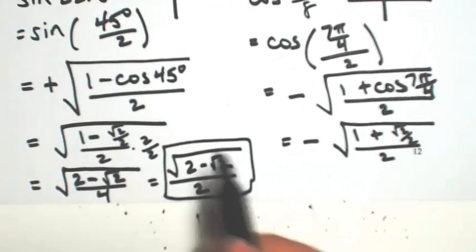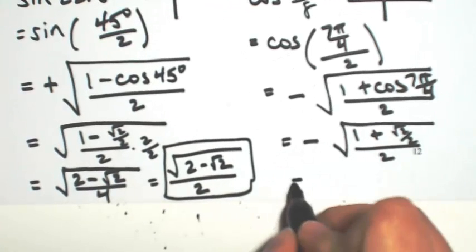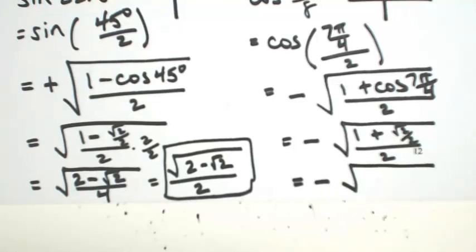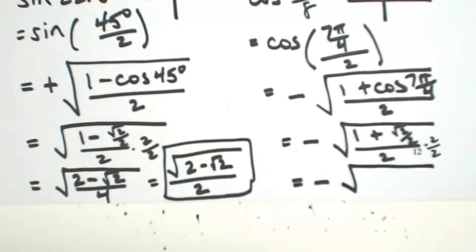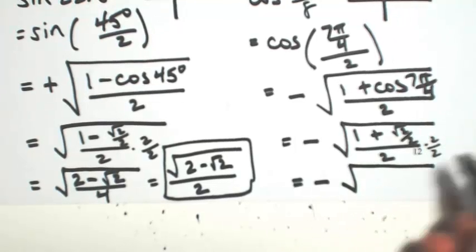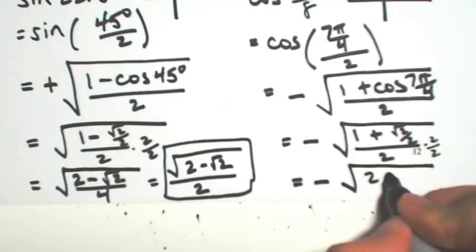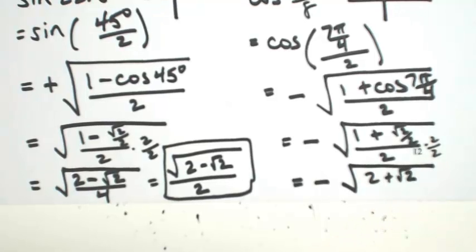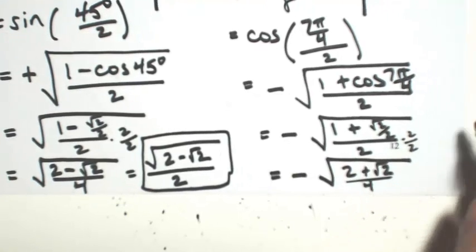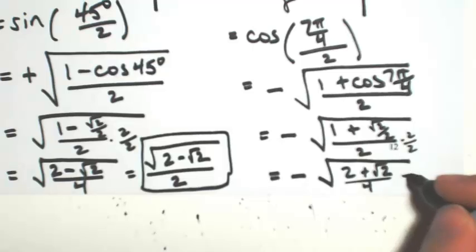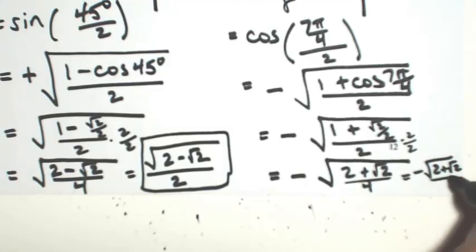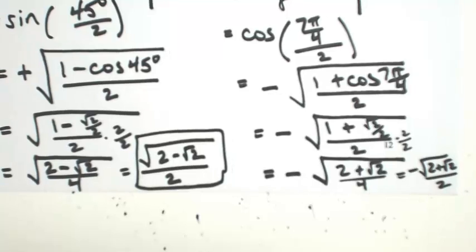It's pretty much the same as the first example, except it's plus instead of minus. Multiplying top and bottom by 2, we get 2 plus square root of 2 over 4, which gives us negative square root of 2 plus square root of 2, all over 2.